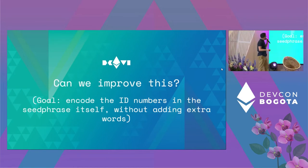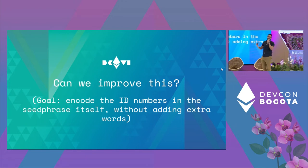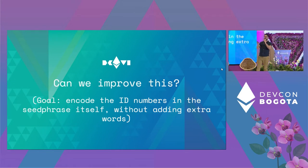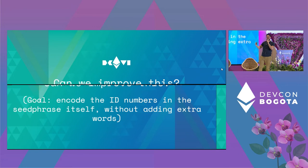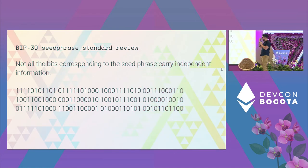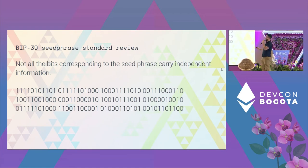Can we improve this? We want to circumvent the labeling entirely — can we encode the ID numbers in the seed phrase itself without adding any extra words? This would be great because you could mix those seed phrases and no information would be lost even if the labeling was incorrect. As it turns out, there's a peculiarity of the BIP39 seed phrase standard that we can exploit.